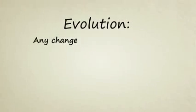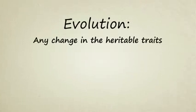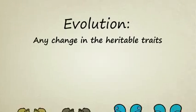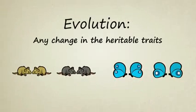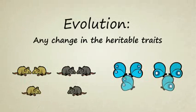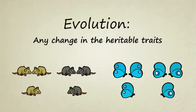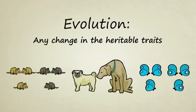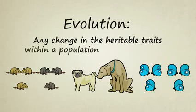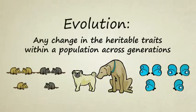In biology, evolution can be defined as any change in the heritable traits — those are physical traits like fur color in mice, spots on the wings of butterflies, or instinctive behaviors like the way that dogs greet their friends with a sniff — within a population across generations.